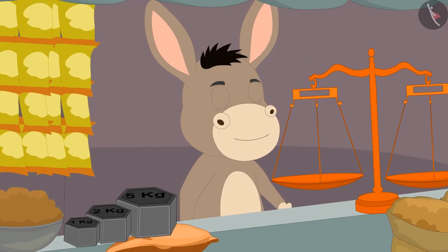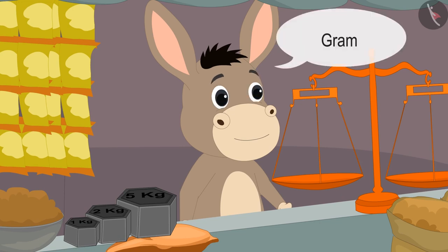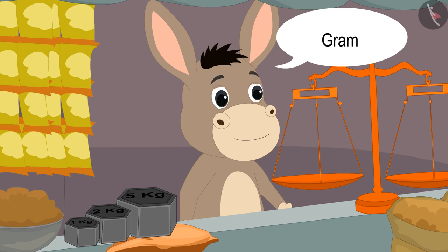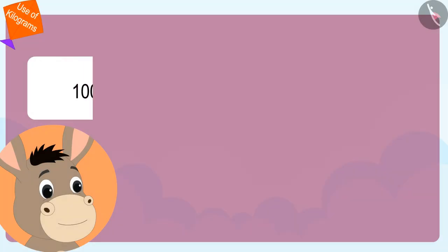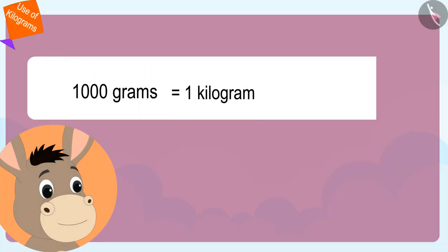Bhola told him that if he had to measure the weight of objects weighing less than 1 kg, he could measure the weight of those items using grams. 1 kg is equal to 1000 grams.